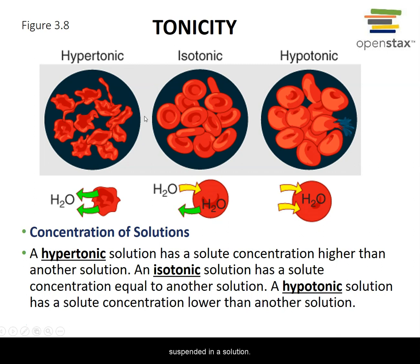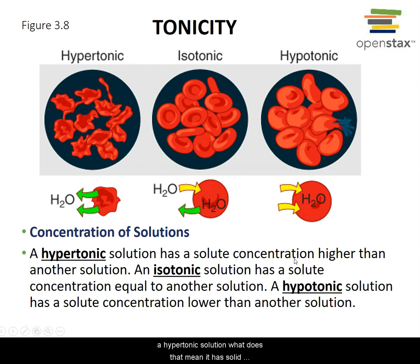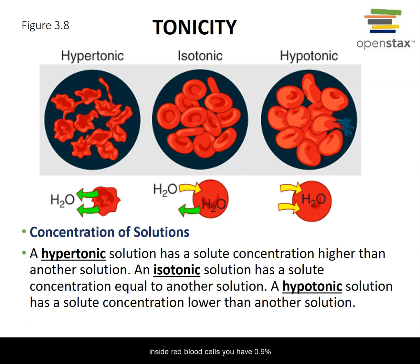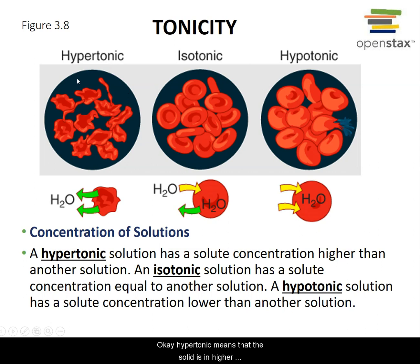Now, these cells are suspended in a solution. In a hypertonic solution, the solute concentration is higher outside than inside the cell. For example, inside red blood cells there is 0.9% sodium chloride. If they are placed in a 3% salt solution, the higher outside solute concentration means lower outside water concentration, so water moves out of the cell.